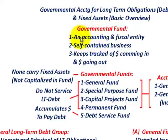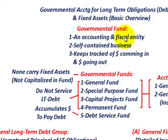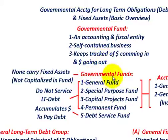A governmental fund would be an accounting and fiscal entity. You'd have a separate accounting and fiscal entity for each of those governmental funds. They would act like a self-contained business — this is where you're going to keep track of the monies coming in and also the monies going out. We'd have five separate funds here, and we'll go over a basic definition of what these funds do and what they don't do.